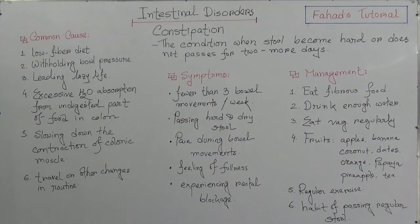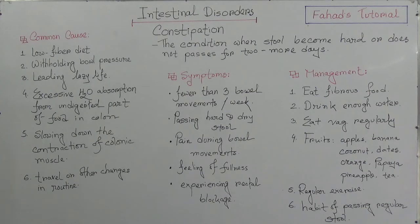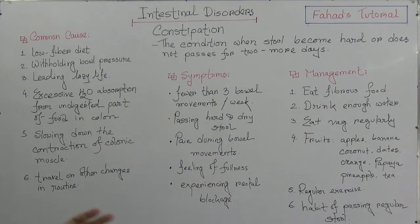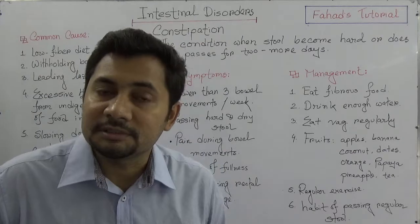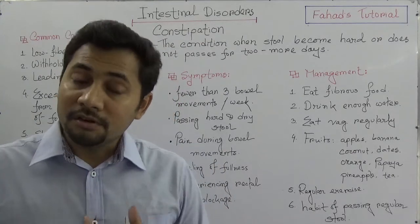To summarize the common causes of constipation: number one, low fiber diet; number two, withholding bowel pressure; number three, leading a lazy life; number four, excessive water absorption from undigested food in the colon; number five, slowing down of colonic muscle contractions; and number six, travel or other changes in daily routine.